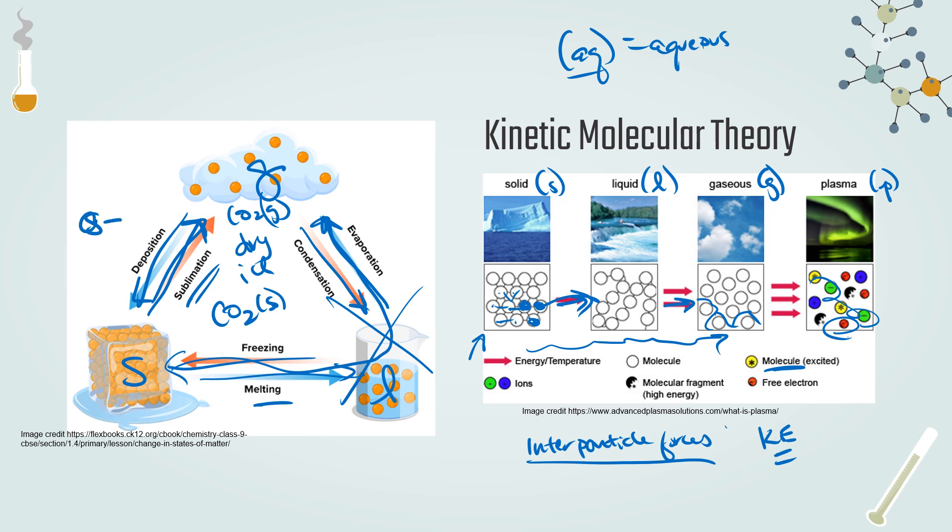If I want to make some dry ice from carbon dioxide, that's known as deposition. So going straight from a gas all the way to a solid, skipping that liquid phase, that's known as deposition. All of these are reversible and all of them again depend on the amount of energy that is being added to a substance.